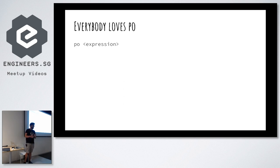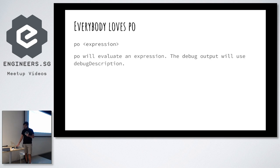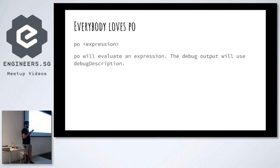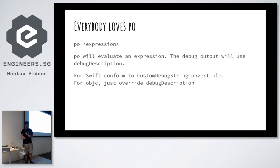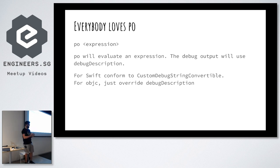If you're debugging something and you want to print the value, this is PO and it works. Under the hood, it'll evaluate an expression and call a method called `debugDescription` on whatever object you pass PO. `debugDescription` is implemented in Objective-C — it's actually a base method on NSObject. You can override it and provide your own implementation.